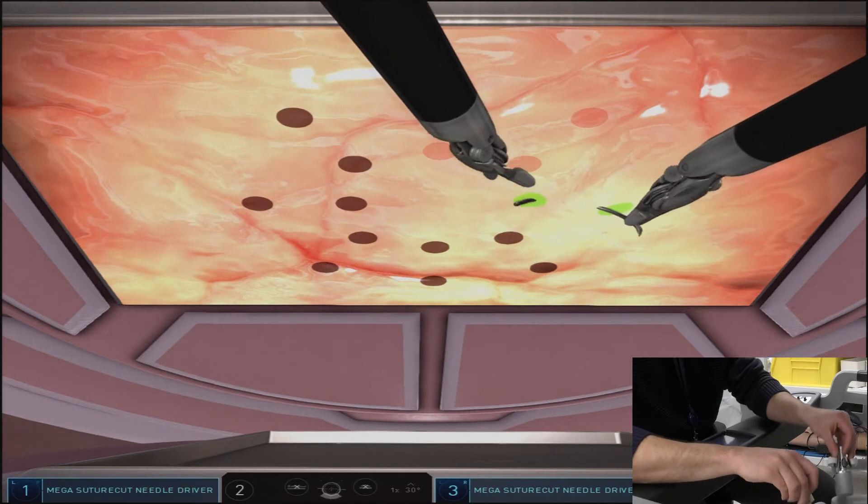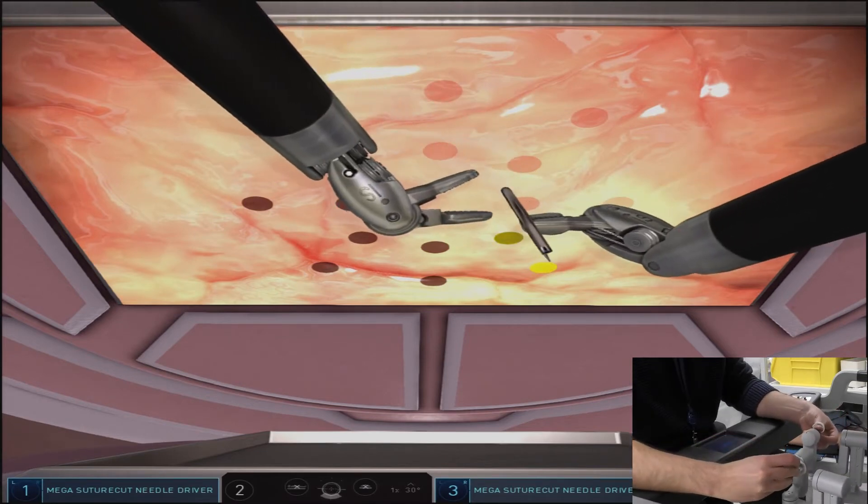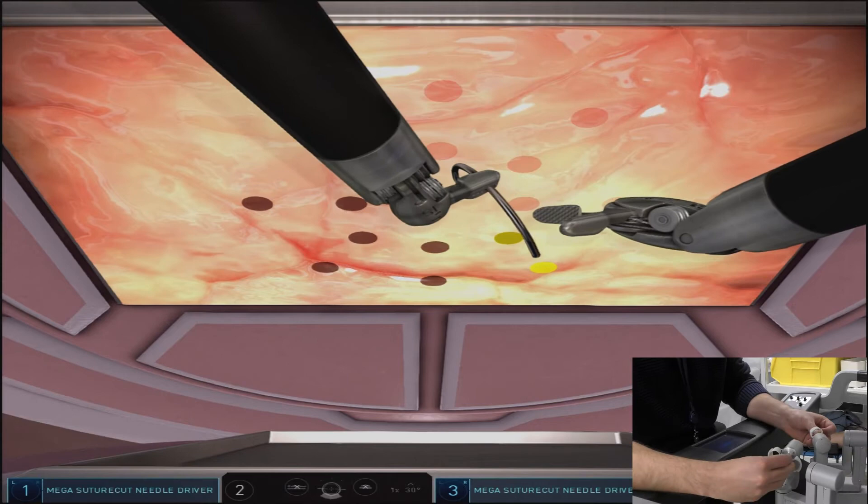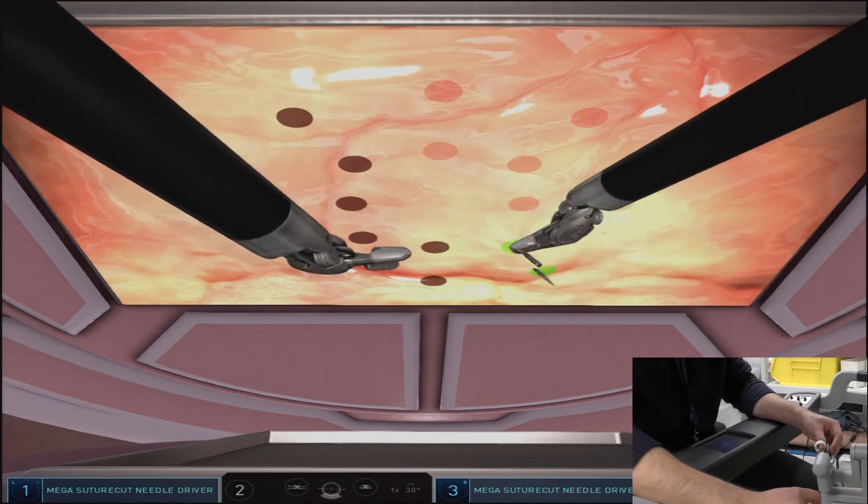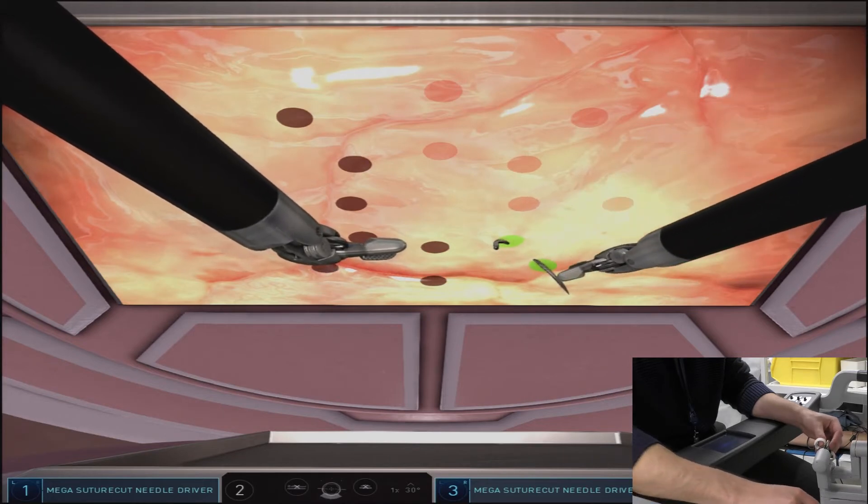These next two throws employed a walk back reload technique where the needle is pulled through with the right, re-grabbed with the left in the middle of the swedge, and then grabbed in the pronated position with the right hand again.